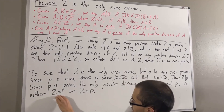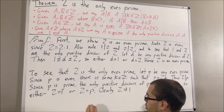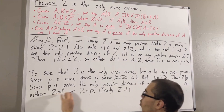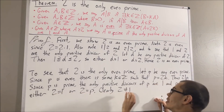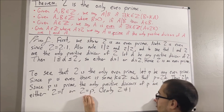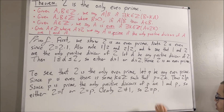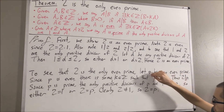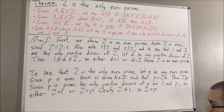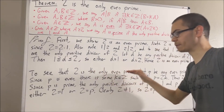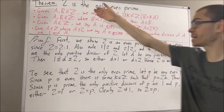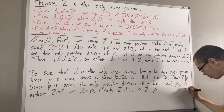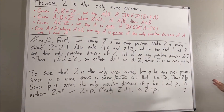But clearly, 2 is not equal to 1. So we have eliminated that possibility, and we must have that 2 is equal to p. So what we've shown is: given any even prime p, p must be equal to 2. So this tells us that 2 is the only even prime. And that's exactly what we wanted to prove, so this completes the proof. And yeah, that's pretty much it for this video.